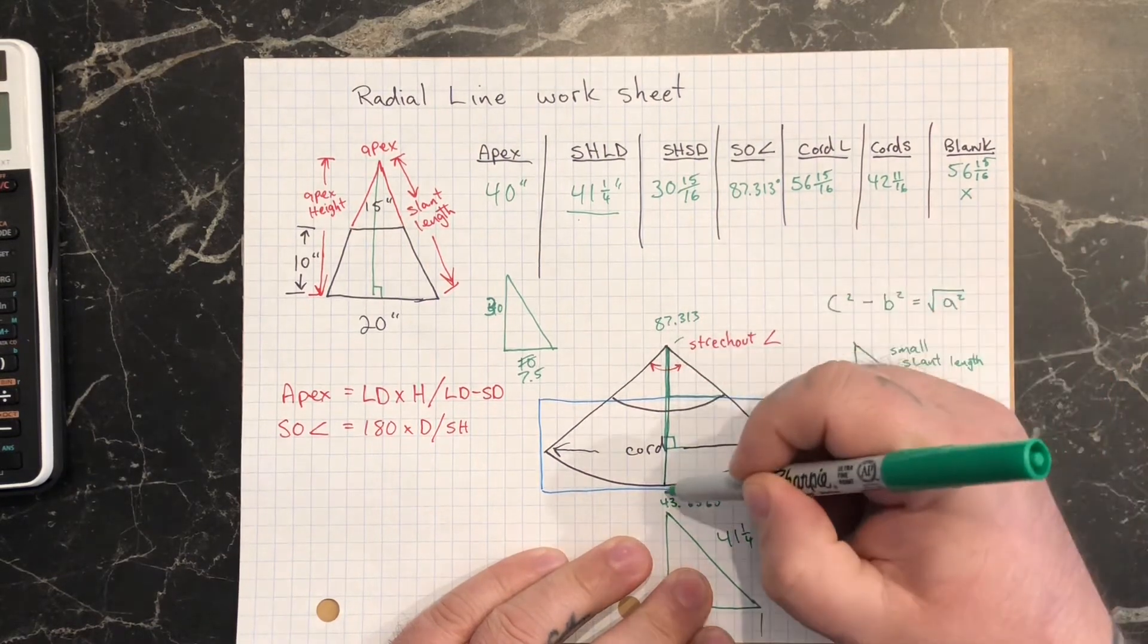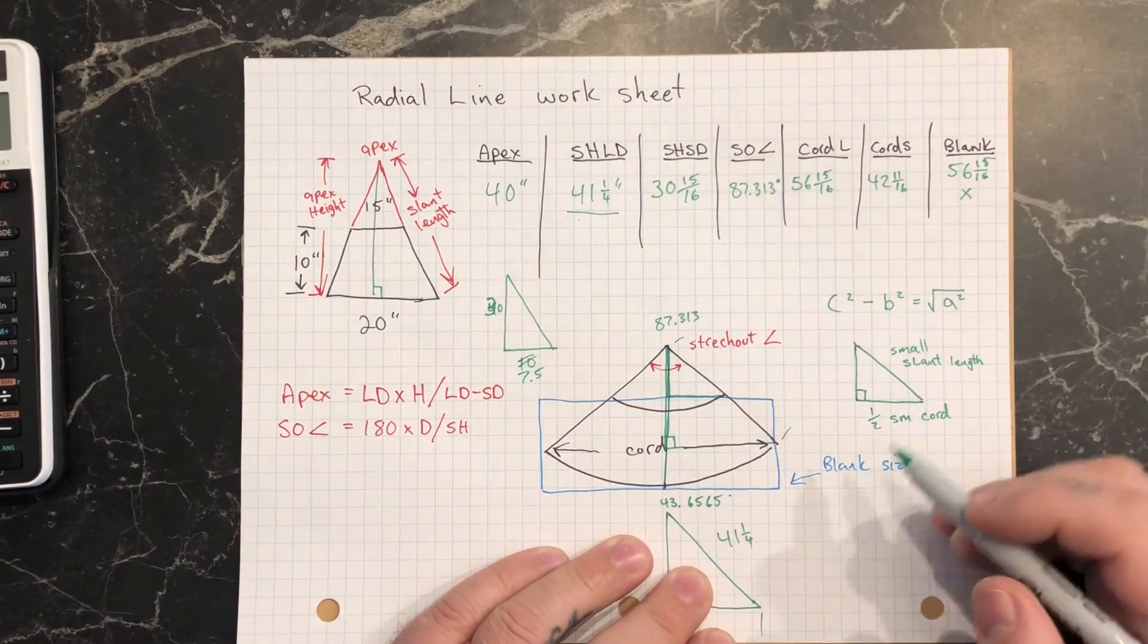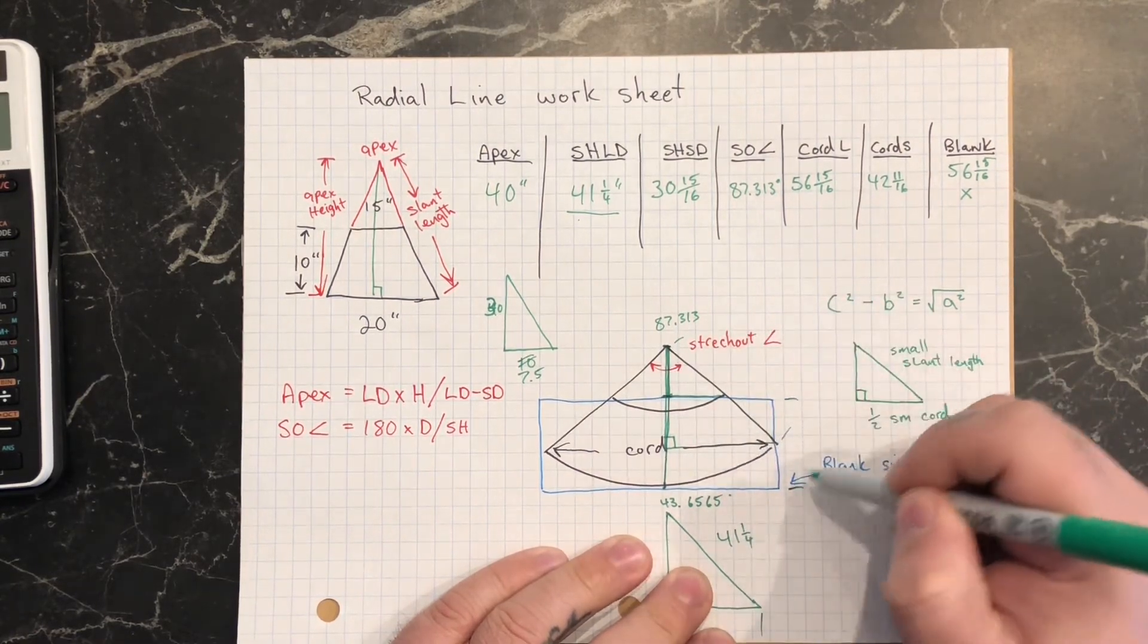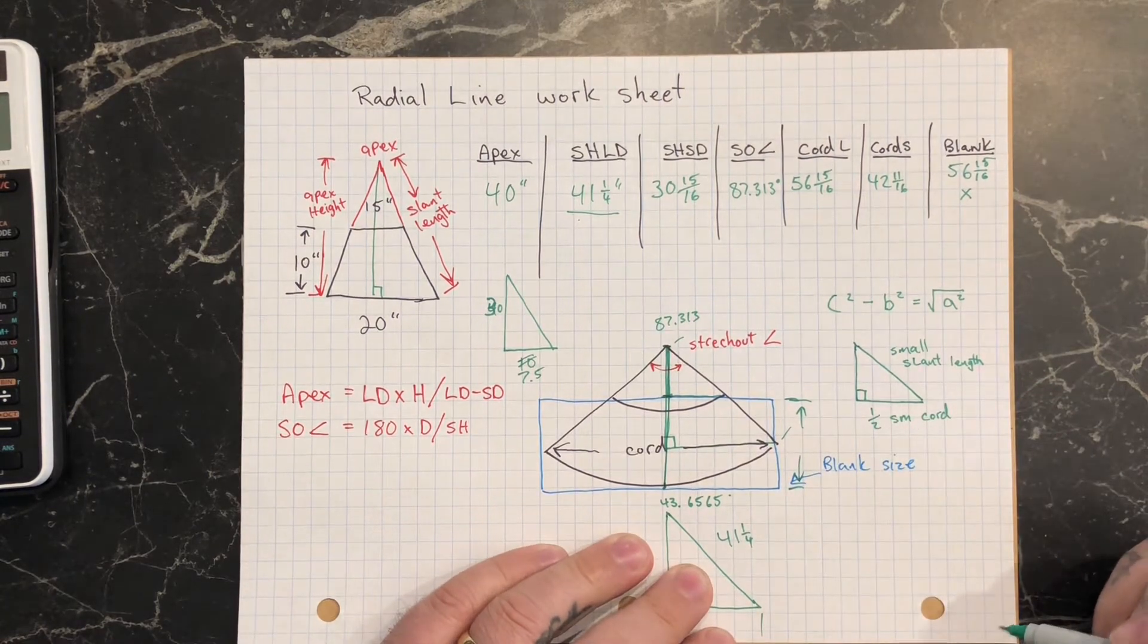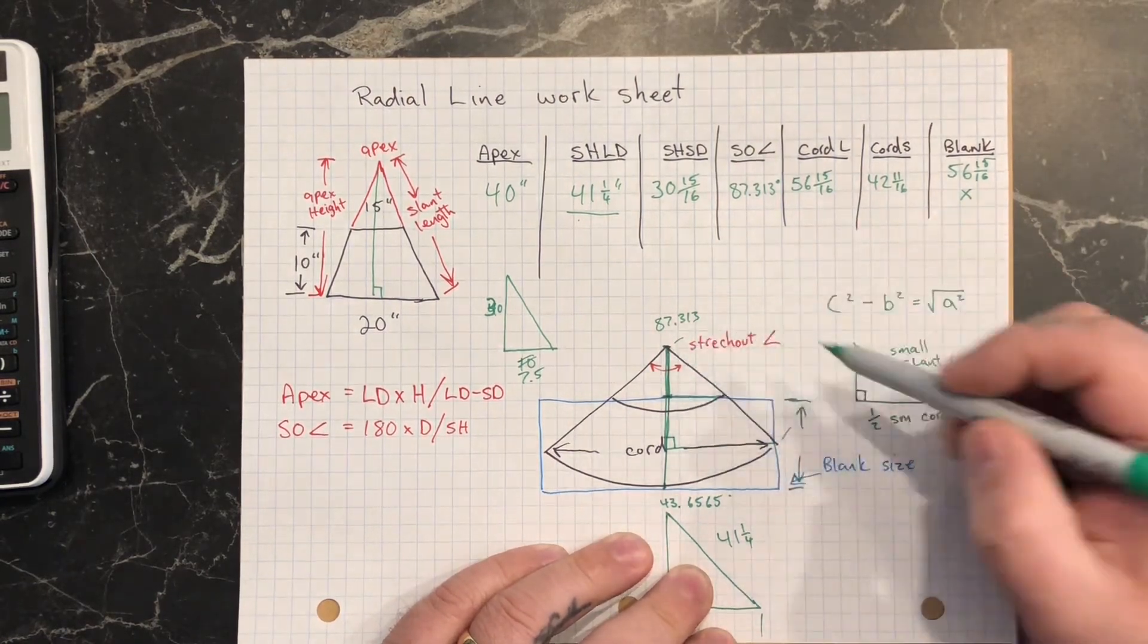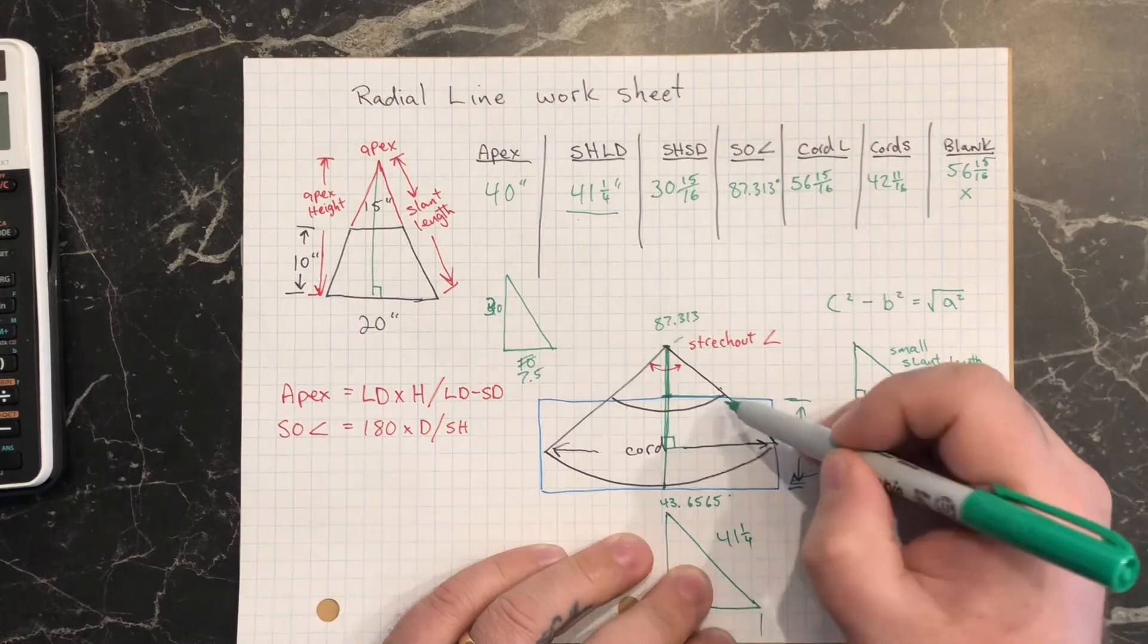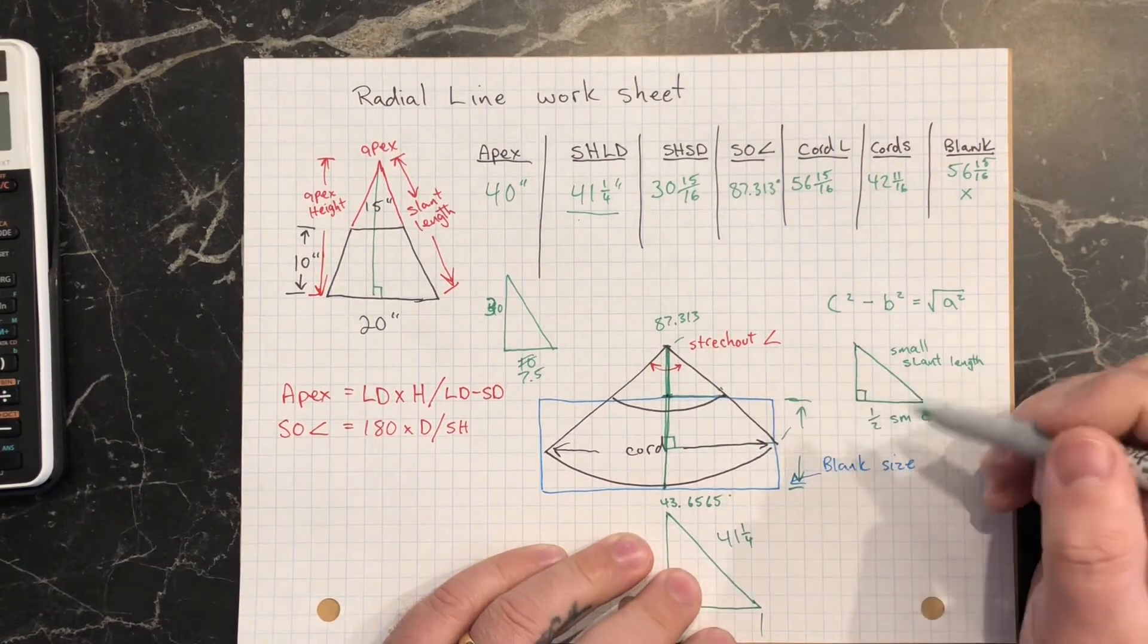So from the bottom all the way to the top there is the slant length height. So what I basically need to do is subtract this length here off of that total length, and what I'm left over is going to be the height of my blank size. Hopefully that makes sense. So again, I have this little triangle in here, so I've moved it over here. This hypotenuse of that little triangle is the small slant length. The measurement from here to here is half of the small chord length.